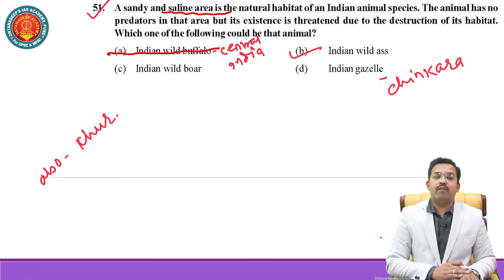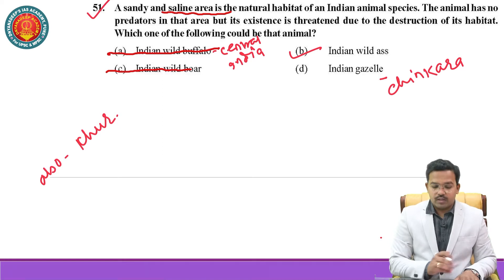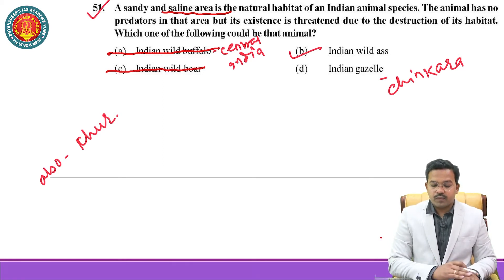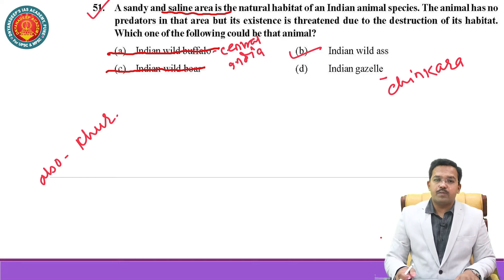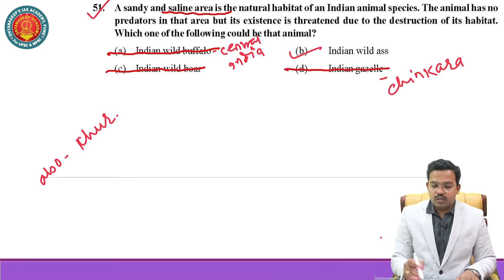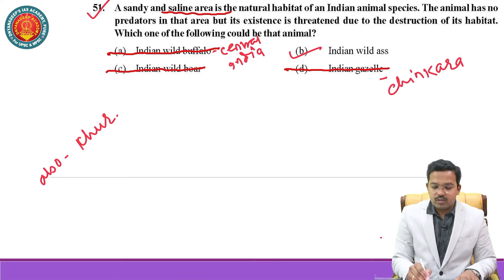Second option: Indian wild boar, also called the Andamanese pig — it is also not threatened, so the second option is eliminated. Third option: Indian gazelle, also called chinkara. The population of chinkara is very stable, and it is mostly found in the regions of Rajasthan. So chinkara or Indian gazelle is also not the correct option.